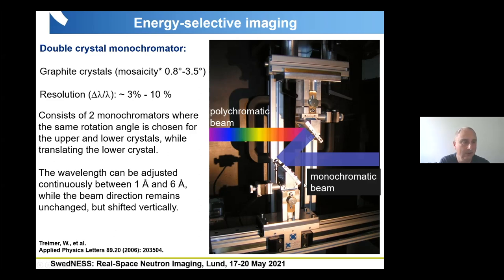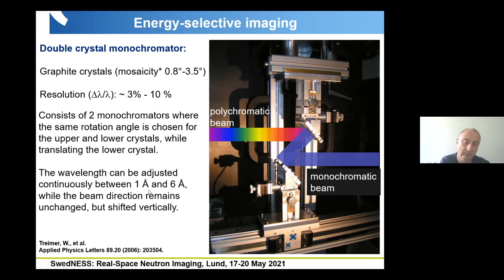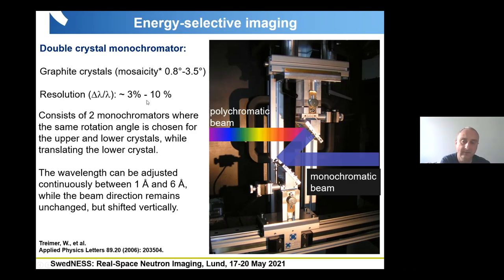This method is very frequently used at steady state neutron sources because we can tune the wavelength in a broad range. We don't need a very sophisticated control system like the vacuum and water cooling required for the velocity selector. Here we have a quite simple, robust mechanical device, and we can also tune the wavelength resolution by changing crystals and using different mosaicity.